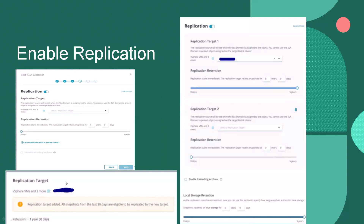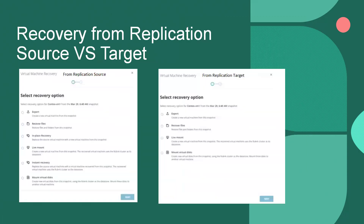Once replication is completed, we can recover from the target cluster. From the replication source, we get more recovery options: export, recover files, in-place recovery, live mount, instant recovery, and mount virtual disk. If we recover from the replication target, we only get export, recover files, live mount, and mount virtual disk — in-place recovery and instant recovery are not available from the replication target.